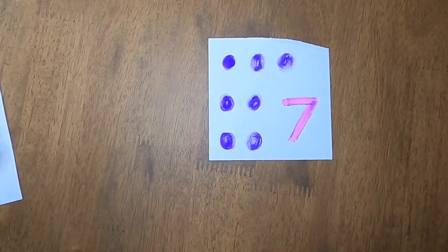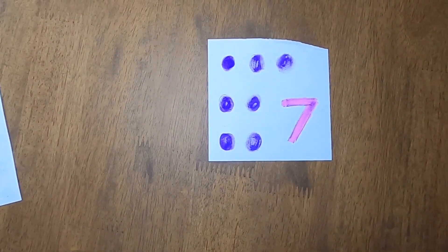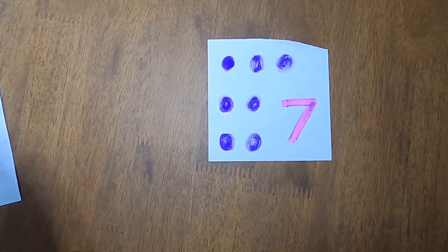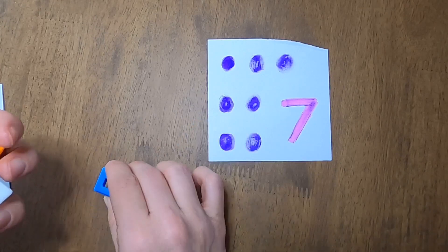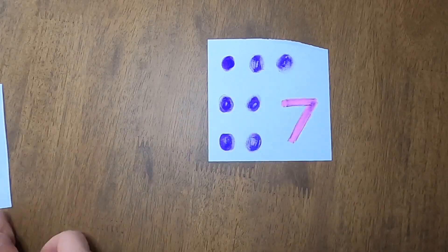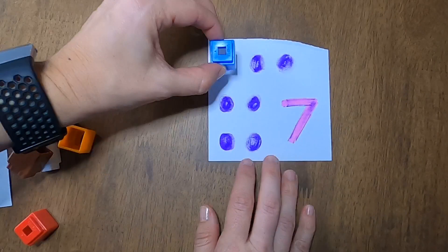And then so now what you're going to do is you're going to find some objects around your house. It could be some little toys that you have. I have some unifix cubes, or you have some food. I'll show you the next one with some food. So you're going to match them onto the card.